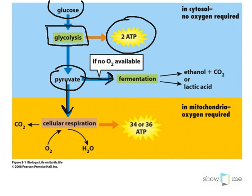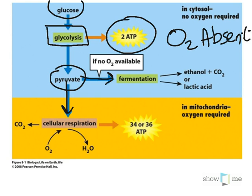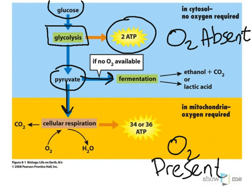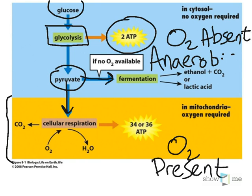That branch point is dependent upon the presence or absence of oxygen. So if O2 is absent, it stays up here in the blue part of the diagram. And if oxygen is present, pyruvate will continue down into this set of reactions in the orange — we will not be covering that area. We are going to stay up in the set of reactions where oxygen is absent. These are referred to as the anaerobic pathways.